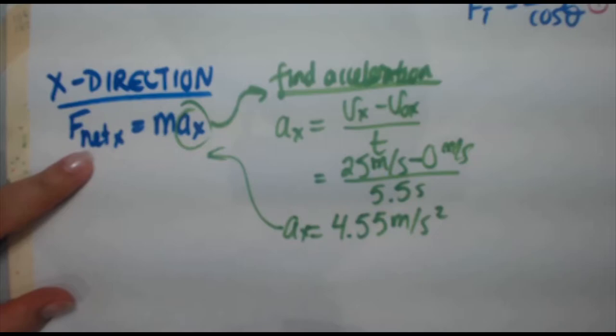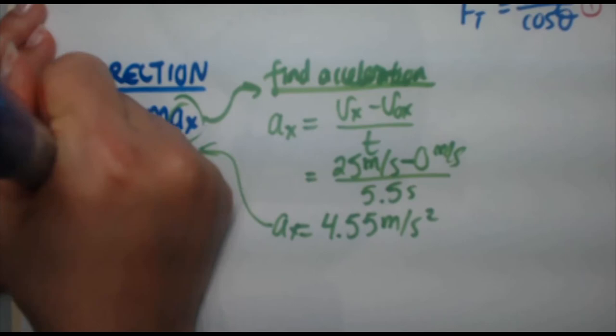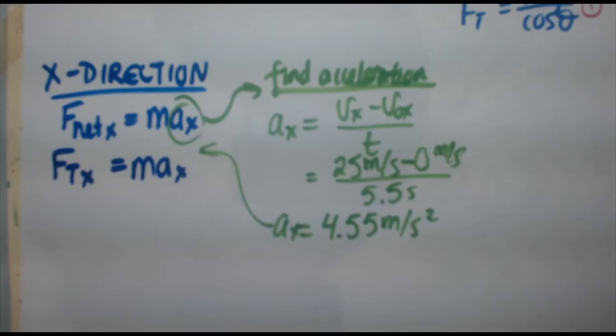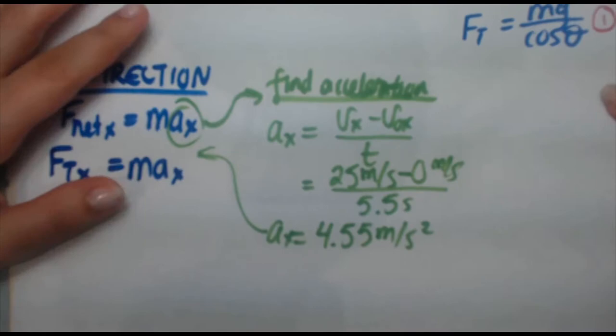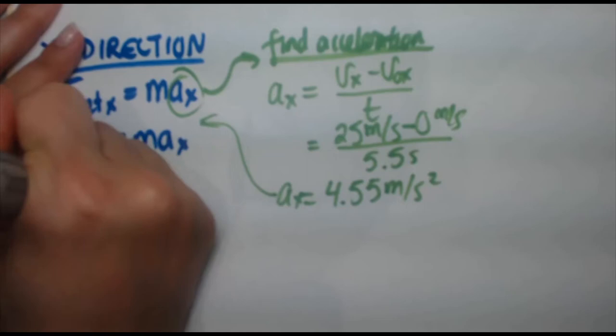First things first, f net x, I only have one force in my x direction, that's FTx, and it's going in the positive x direction. So I'm gonna replace f net x with FTx equals m a x. FTx, next step, express it in terms of the original force. FTx is opposite to this angle, so therefore FTx is equal to FT times sine of theta.